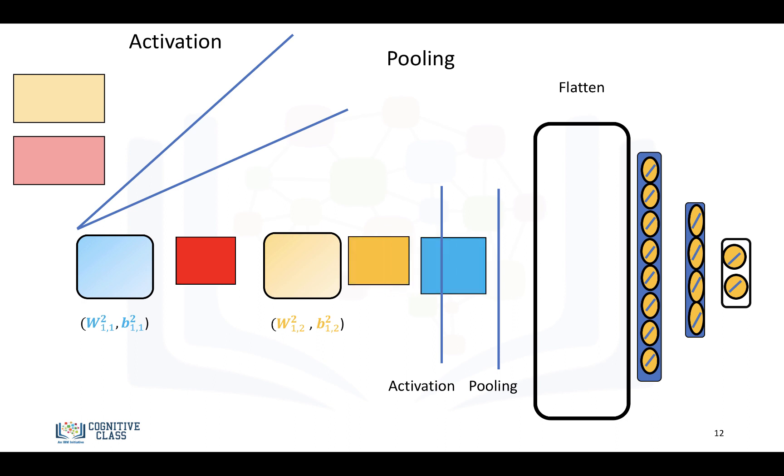So, we'll take the output of this layer, which is just a set of activations, apply the activation function and pooling, flatten it, and then these will be the input to our fully connected layer.